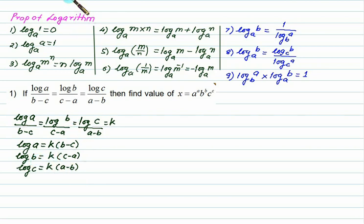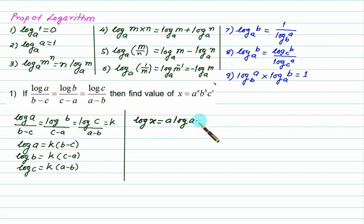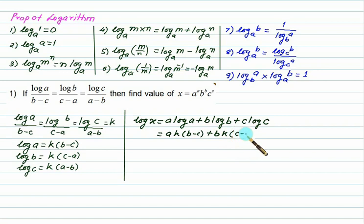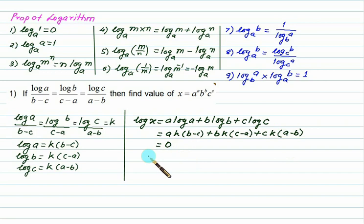We know the values of log a, log b, log c in terms of k. Taking the log of the given expression, we get log x = a·log(a) + b·log(b) + c·log(c). Substituting, this becomes a·k(b−c) + b·k(c−a) + c·k(a−b). Expanding confirms this equals zero. So log x = 0, which means x = 1, since log 1 = 0 to any base.